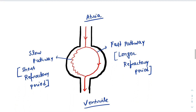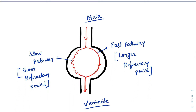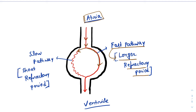Let's see what is happening at the level of AV node normally. When an impulse originates from the SA node in the atria, it travels towards the AV node. Once it reaches the AV node, it will have two ways to go — one is the fast pathway and the other is the slow pathway. As the name suggests, the fast pathway means the impulse can travel faster. But the fast pathway has a longer refractory period.